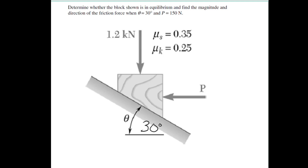Find the magnitude and direction of the friction force. Which direction is it going — up or down? That 1200 newtons going down seems like it's a lot larger than the 150 newtons pushing to the left, but we really need to split everything into the direction of the friction force and the direction of the normal force to figure this out.